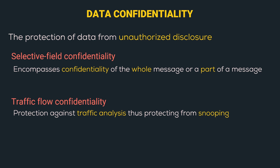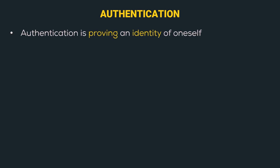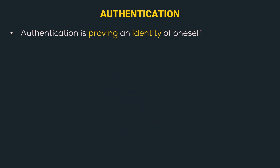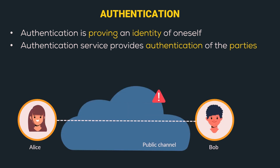We covered traffic analysis and snooping in the previous video. That was all about Data Confidentiality. The next is Authentication — proving the identity of oneself. The best example is a fingerprint: since every person has a unique fingerprint, we can prove our identity using it. Authentication service provides authentication of the communicating parties — let's use the Alice-Bob example to understand.